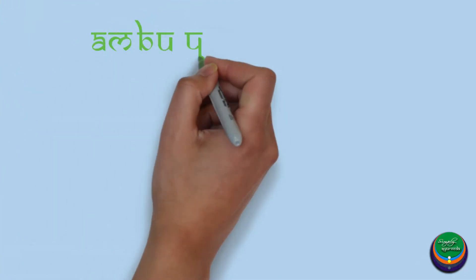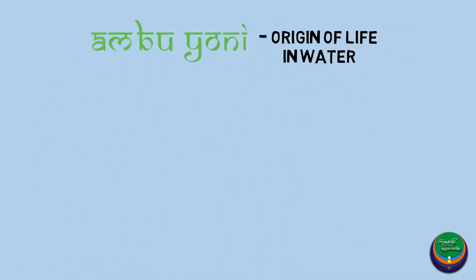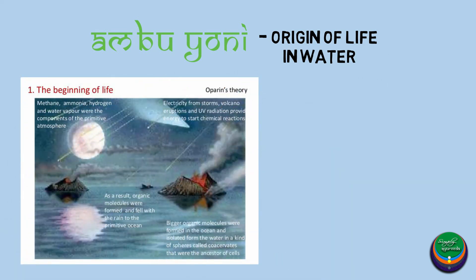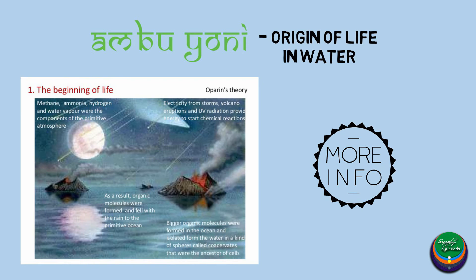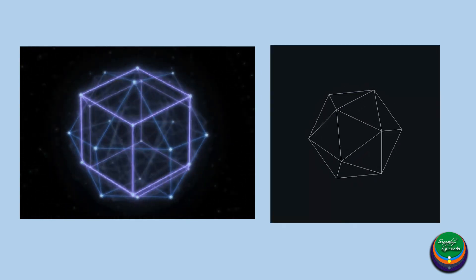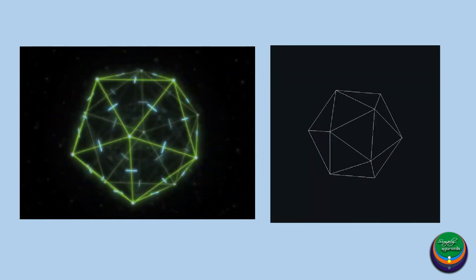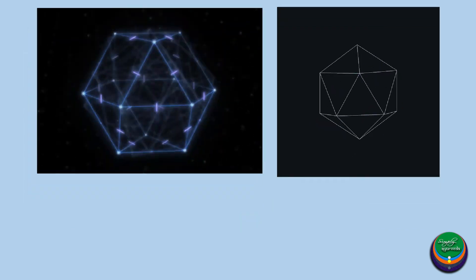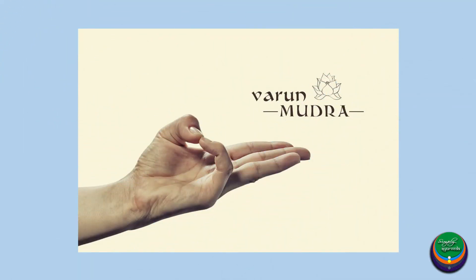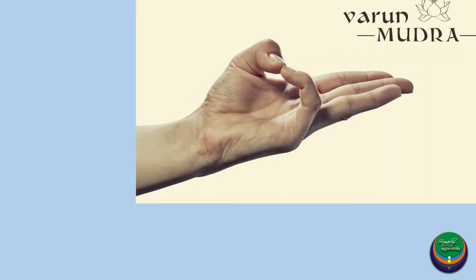Acharya Vagbata states the principle of ambu yoni — he opines that life originates from Jala or ambu, which is proved and accepted in the present day. Among the platonic solids, the icosahedron, a solid with 20 faces, represents the Jala Mahabhūta. This mudra is utilized by Indians to refer to Jala Mahabhūta.